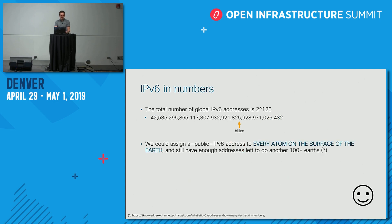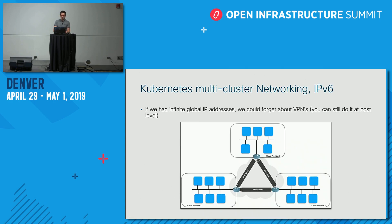In numbers, the number of global IPv6 addresses available is enormous. One quote I found: you can assign a public IPv6 address to every atom on the surface of the earth and still have enough addresses left to do another 100-plus earths. So we have enough addresses for all computers, all IoT devices, and all applications for a very long time.